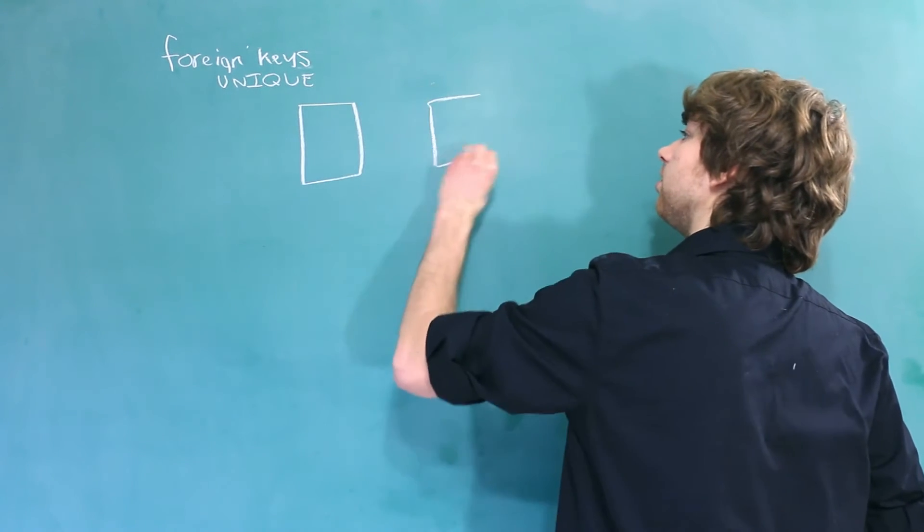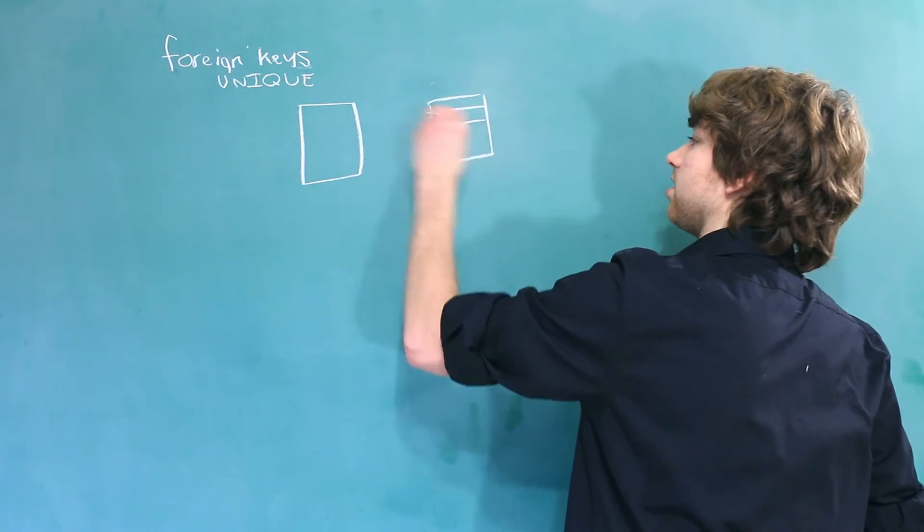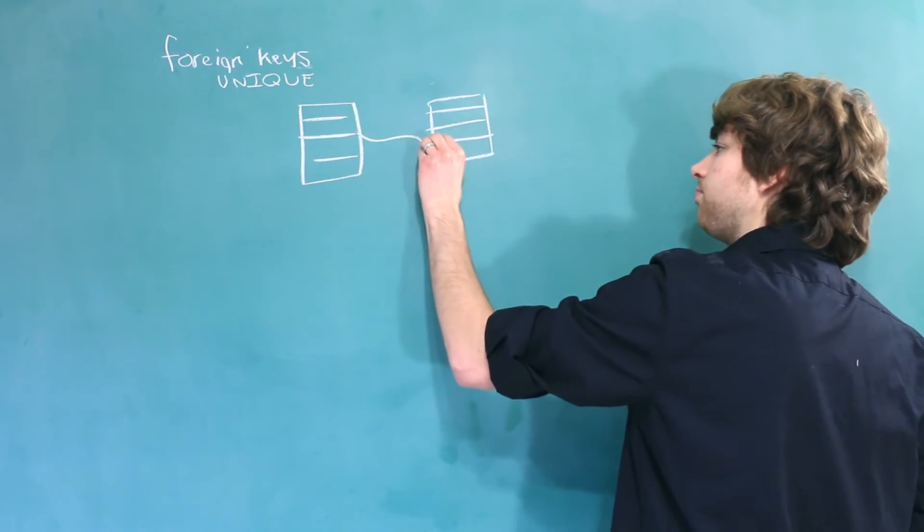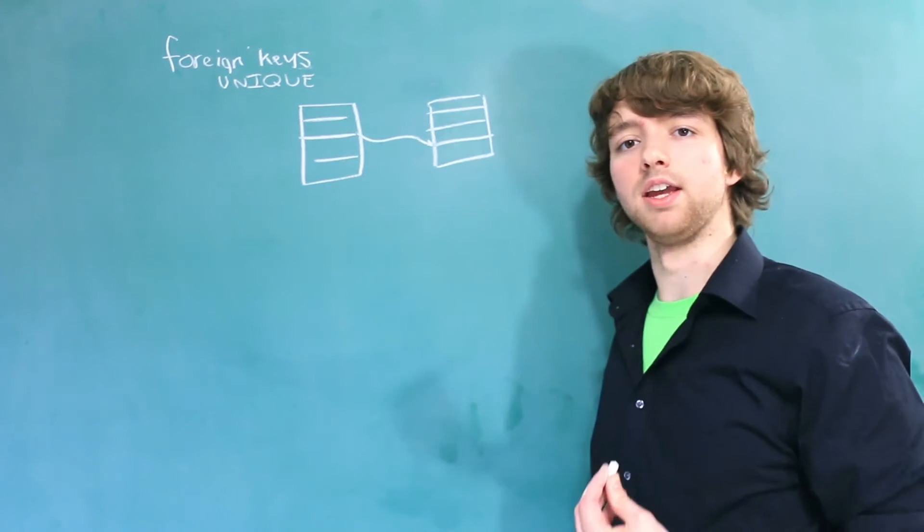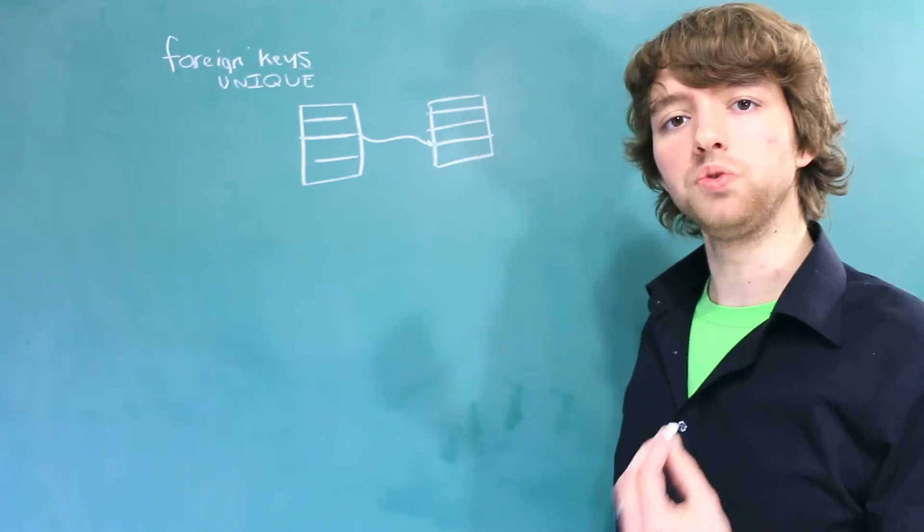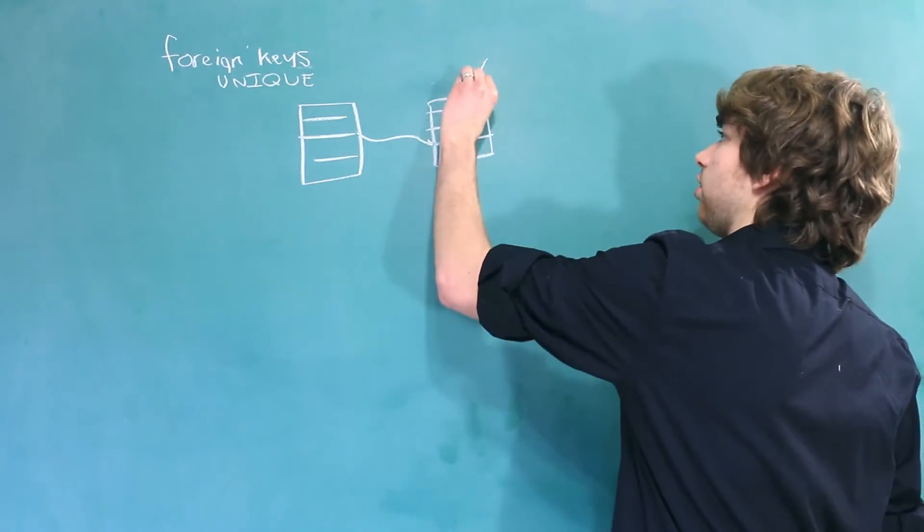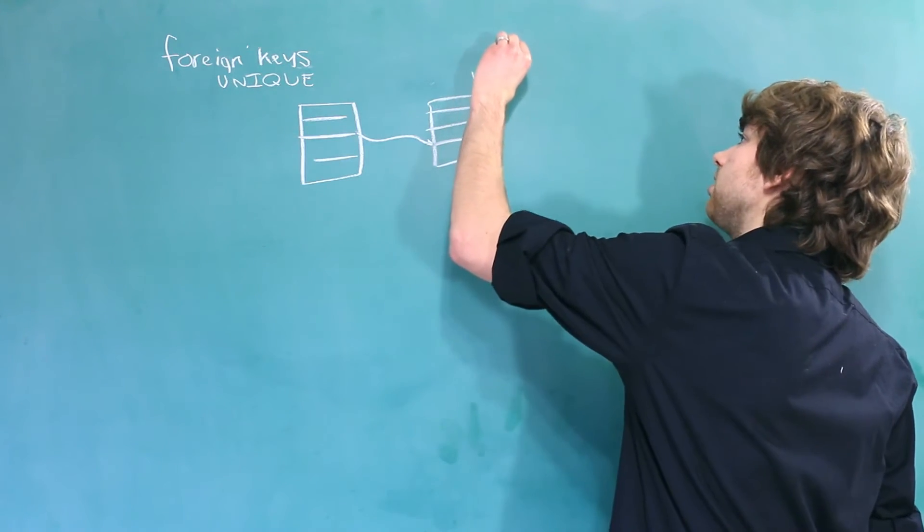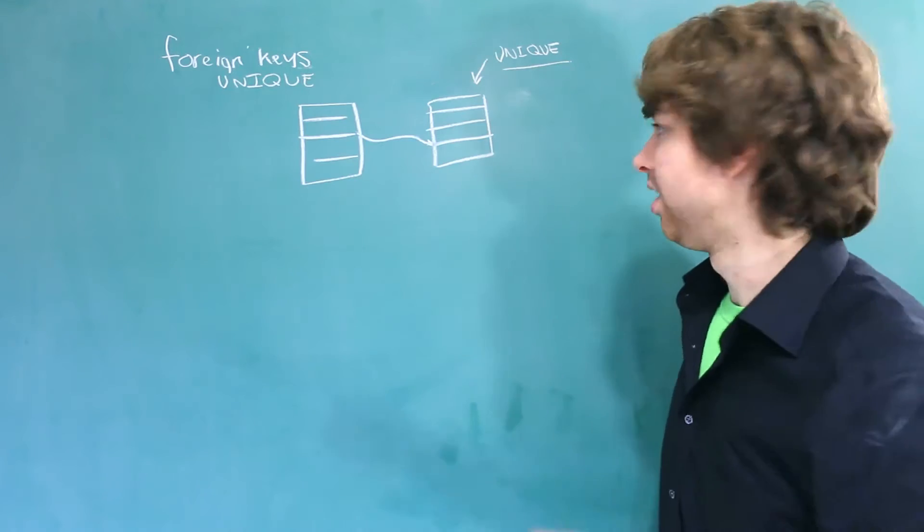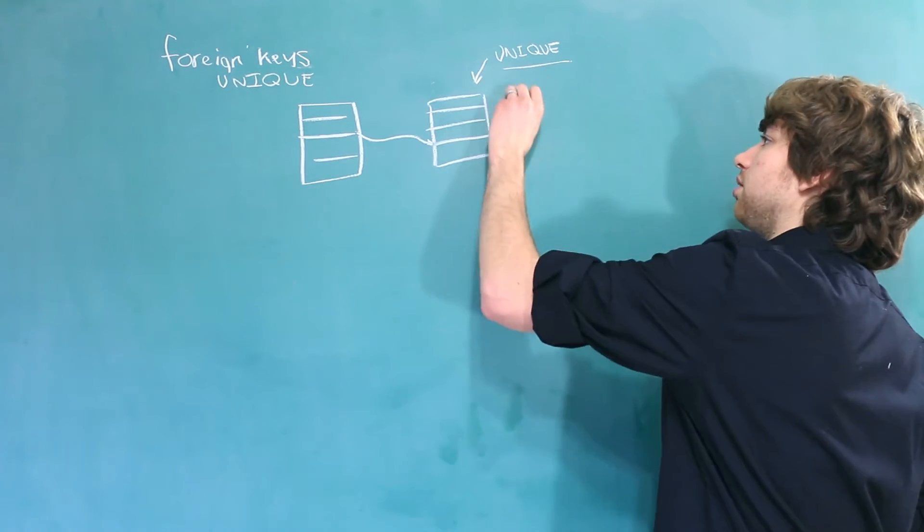So we have two tables, and this row, let's say these lines are rows, and this row wants to reference this row, it needs a way to say exactly what row it wants. And the only way it can do that is if all of these rows are unique. To do this, we need at least one column with the unique constraint. Now, oftentimes this is going to be the primary key.